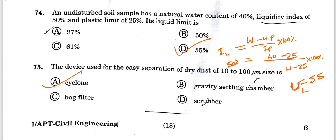Question 75, the last question of this video: The device used for easy separation of dry dust of 10 to 100 micron size is a cyclone. Option A is correct.